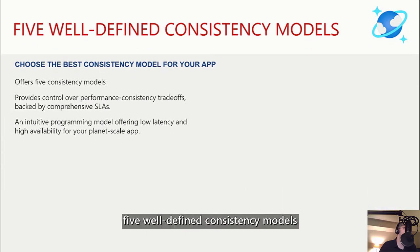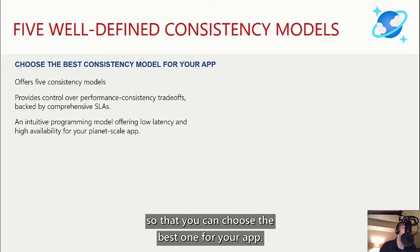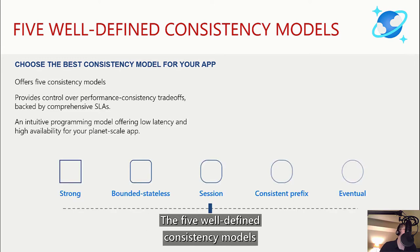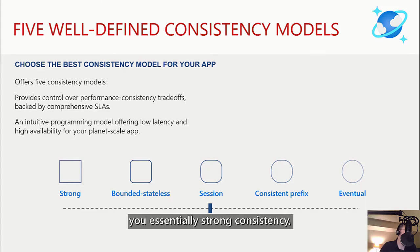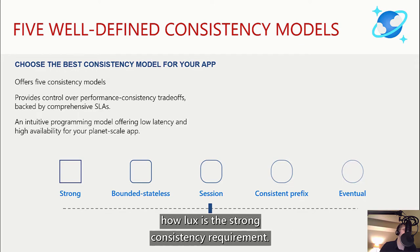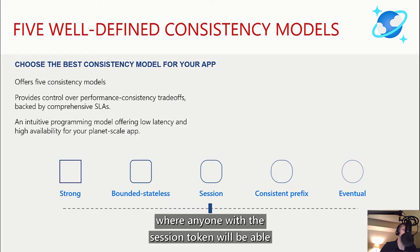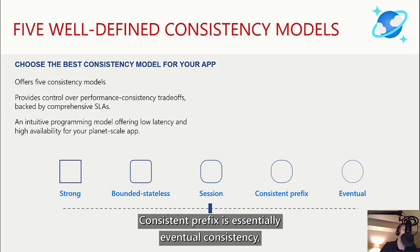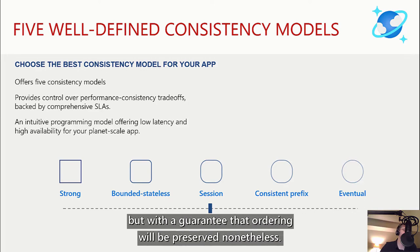Azure Cosmos DB offers five well-defined consistency models so you can choose the best one for your app, running the spectrum from eventual to strong. Bounded staleness gives you essentially strong consistency, but with a time or operation count bound specifying how lax the strong consistency requirement is. Session consistency allows a read-my-writes ability where anyone with the session token will be able to read the writes of others with the session token. Consistent prefix is essentially eventual consistency, but with a guarantee that ordering will be preserved nonetheless.